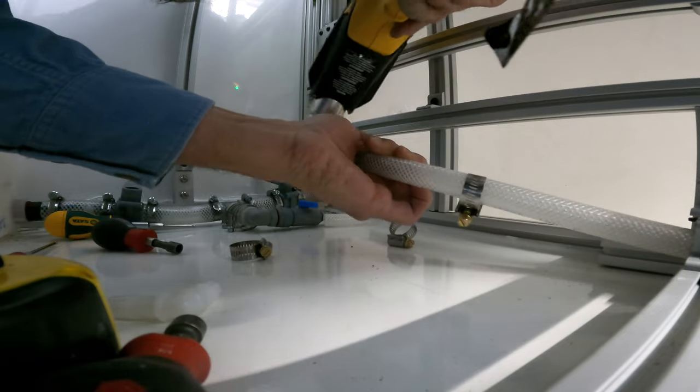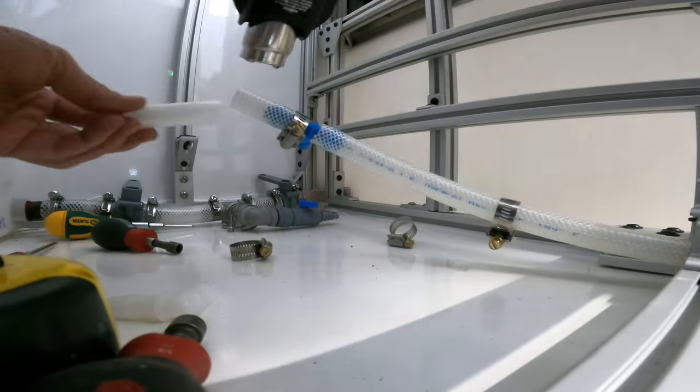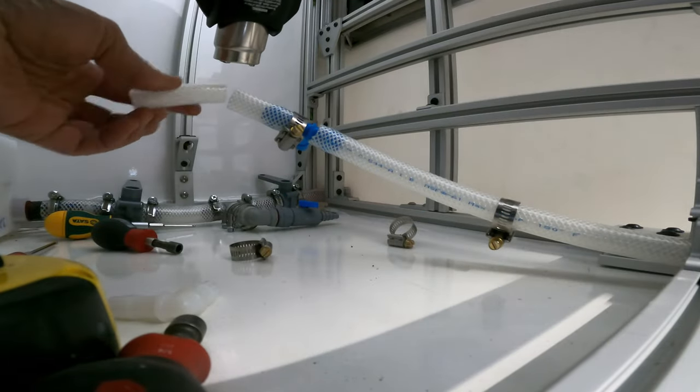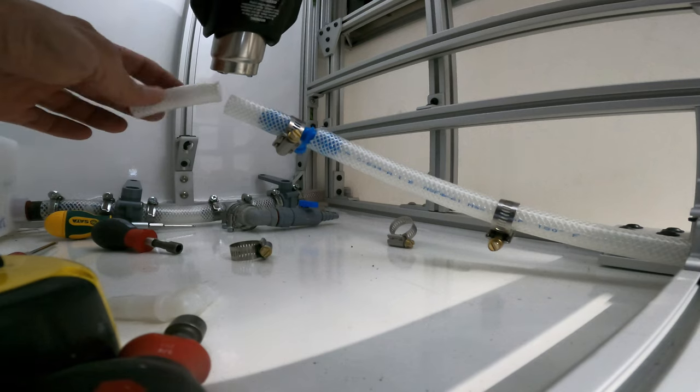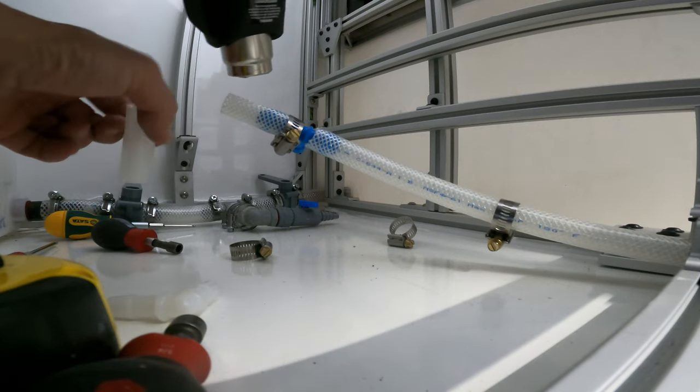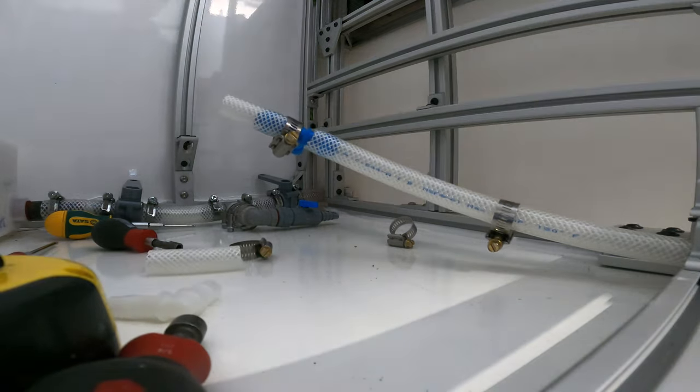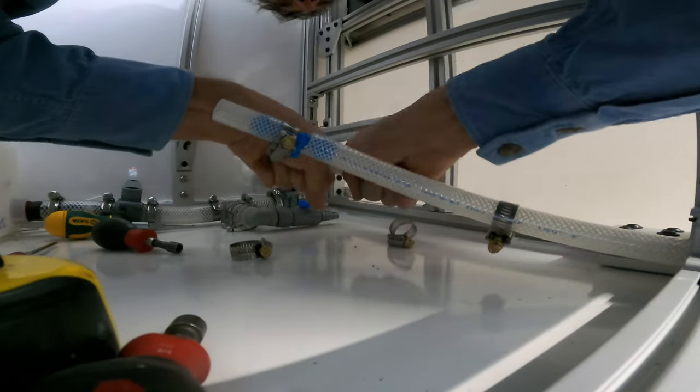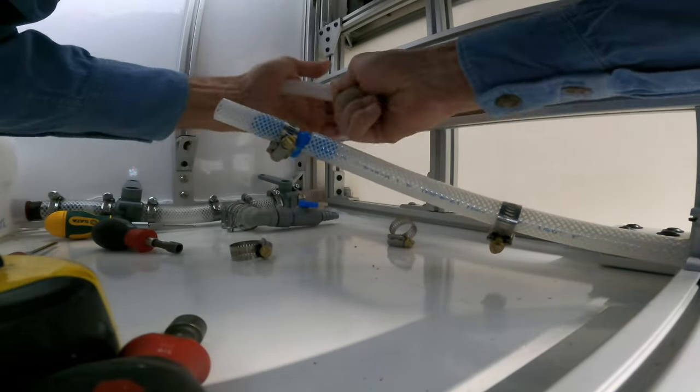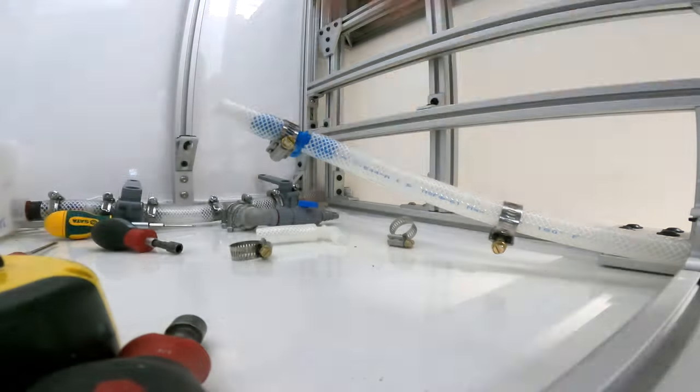I went ahead and laid everything out here and just keep installing things as I go. One of the benefits of using this structural composite framing for the walls and floor of the camper is that I can actually draw on it with a dry erase marker and draw out where things are going to go, which also helps as well as laying things out.